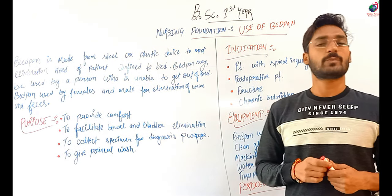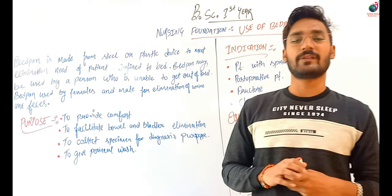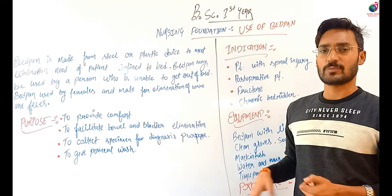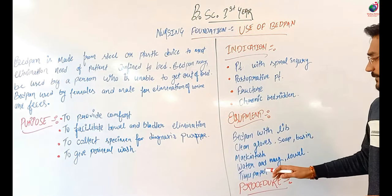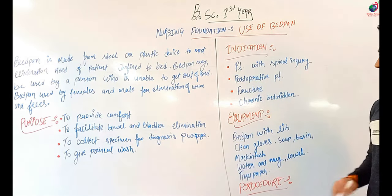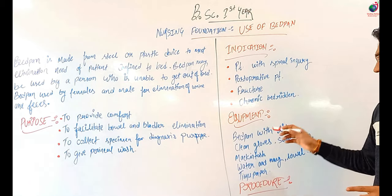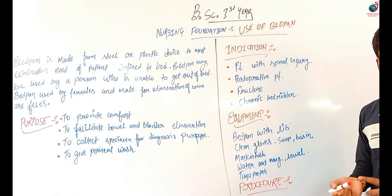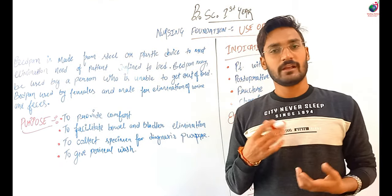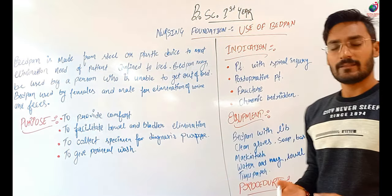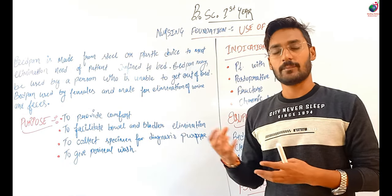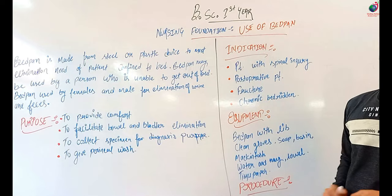Also tissue paper — used to clean the area during bedpan use. So in summary, equipment needed when using a bedpan includes: bedpan with lid, clean gloves, soap and basin, mackintosh, towel, water with mug, and tissue paper.